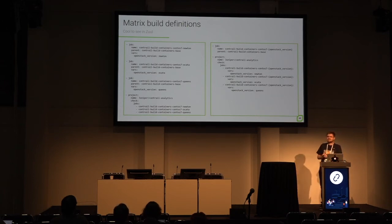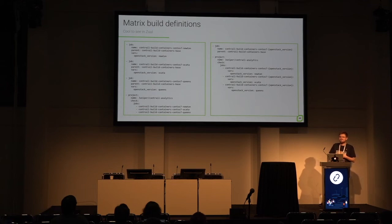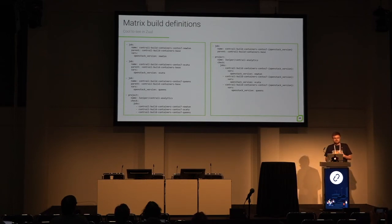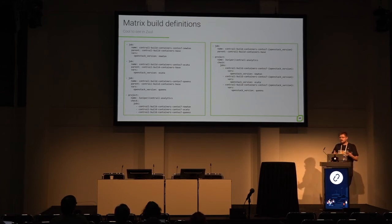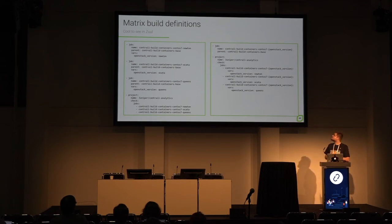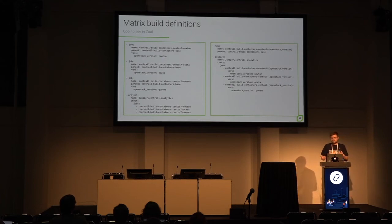The second wishlist item is matrix build definitions — something we had in Zuul 2.5. Looking at our example configuration on the left, the only difference between the three jobs is the OpenStack version. This is simple, but when you assign the jobs to projects the config becomes longer and longer, requiring separate job definitions for what is effectively just one variable. On the right is my idea of how it could look in Zuul version 3: some sort of regex or variable matching for the job name so you just provide one variable, the job name changes, and you're done.